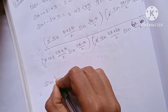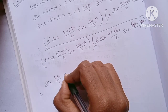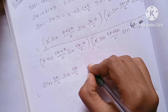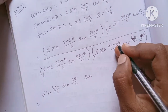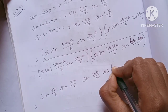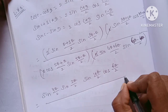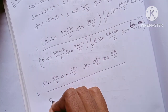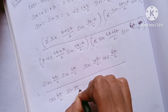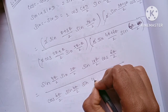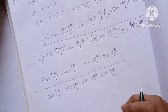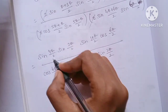Simplifying: theta plus 3 theta gives 4 theta by 2, and 2 theta by 2. Then 8 plus 2 gives 10 theta by 2, cos 6 theta by 2. After cancellation of common terms, the expression simplifies to 1, completing the proof that LHS equals RHS.